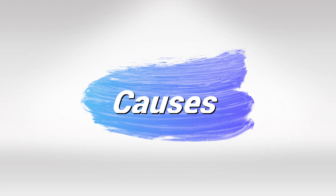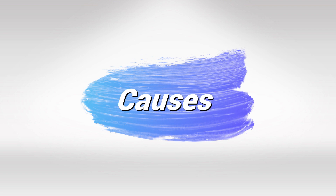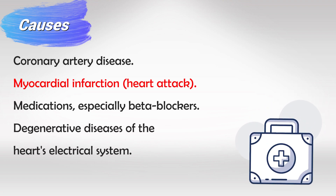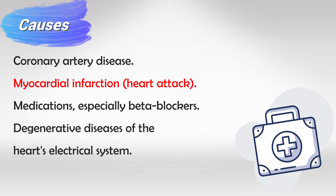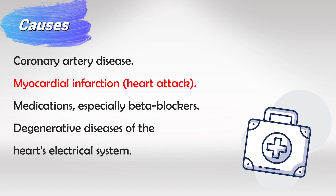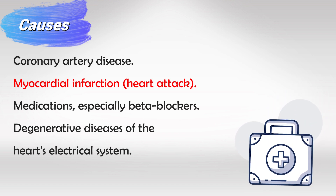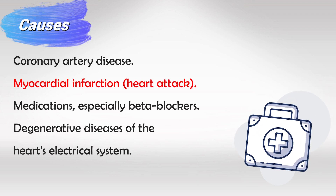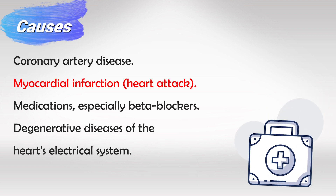The most common causes are heart diseases that affect the electrical pattern — think coronary artery disease and myocardial infarctions, which should be at the top of your differential diagnosis. Some medications that slow down the heart, like beta blockers or calcium channel blockers, as well as any heart condition or disease that affects cardiac electricity.